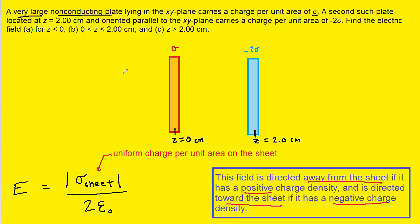For the first distance, z is less than zero — that's the region to the far left of our diagram. We pick any arbitrary point there and follow the rules. Since the first plate has positive charge density, the field from that plate points away from it, which is to the left at our chosen point. We label that E, coming from the positive plate.